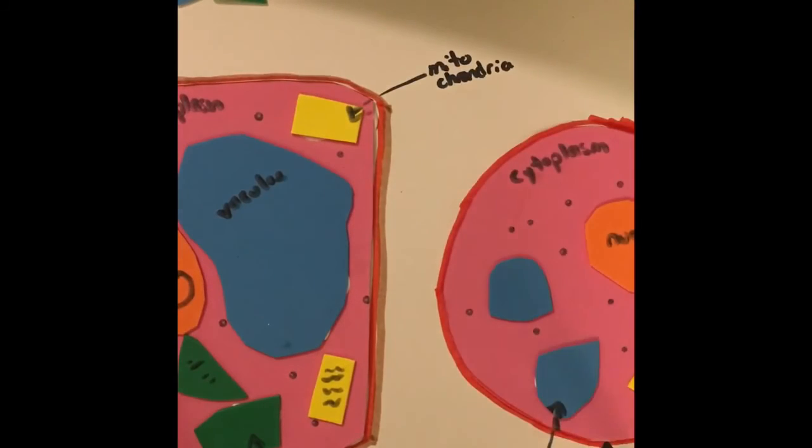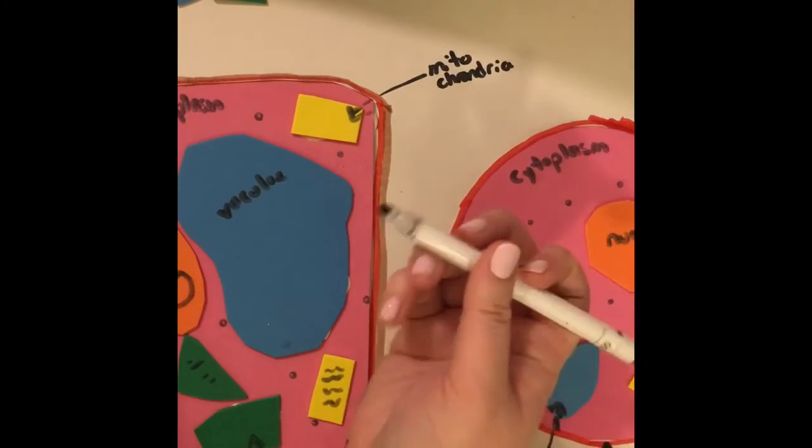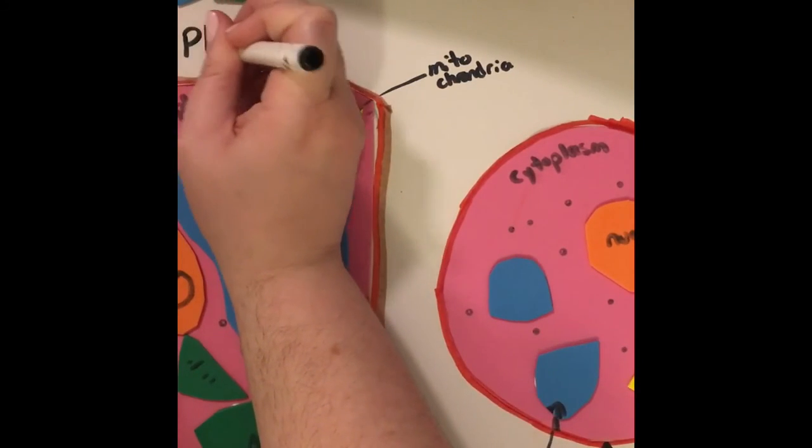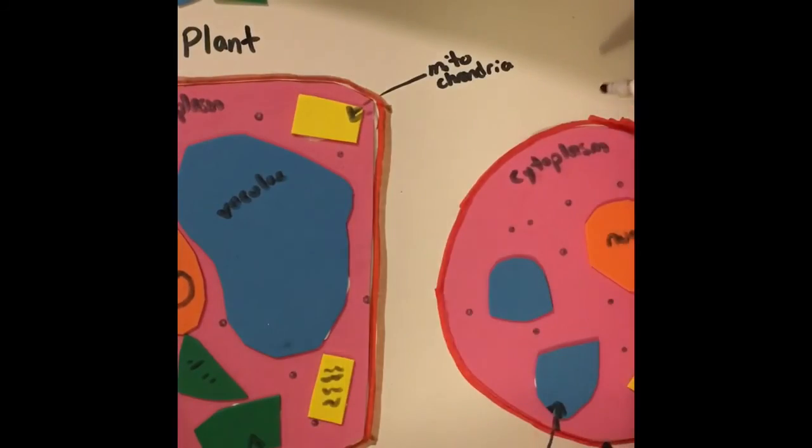And once you've had everything labeled, before you turn in this project, you need to make sure that your name and your homeroom, first and last name, are found somewhere on the poster and that you have clearly identified which of your models is the plant and which one is the animal cell.